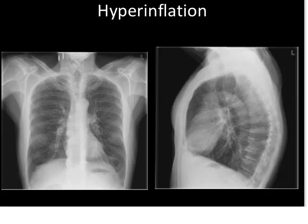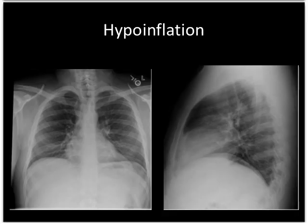Here's a patient who is hyperinflated. The diaphragms come down to approximately the eleventh rib posteriorly, but that, to be honest, is not as helpful as looking at the lateral study — you can see how flat these hemidiaphragms are; you can pretty much put a ruler along them. Conversely, this patient is hypoinflated. You can see that diaphragm coming up almost all the way to the level of the hilum on the lateral study, and the diaphragms come down to about the ninth posterior rib on the PA study.